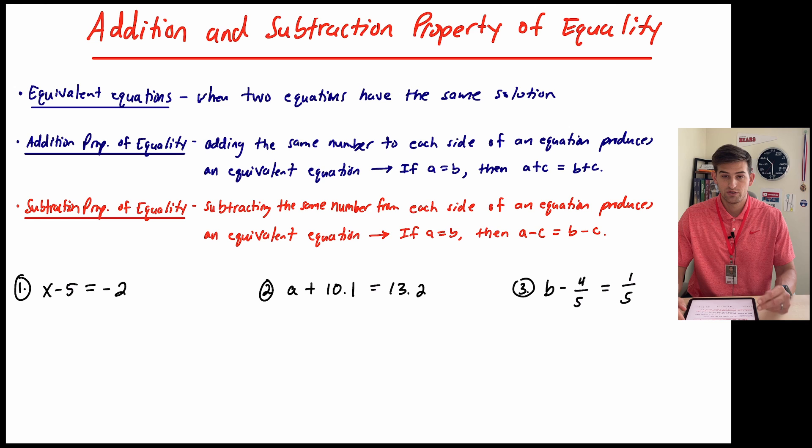Same idea with subtraction, but now we're just subtracting the same number from each side of the equation. So if A is equal to B, then A minus C would be equal to B minus C. Once again, we are subtracting C from both sides, so we're doing the same operation. We're keeping that equation balanced.